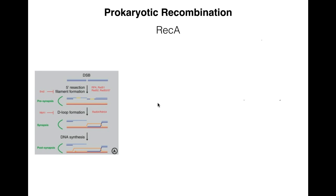Prokaryotic recombination requires the protein REC-A, which, when we were talking about the SOS response, acts as a nucleoprotein filament that cleaves LEX-A to allow the transcription of error-prone polymerases. Here, it's going to be involved in the invasion of the single-stranded DNA.